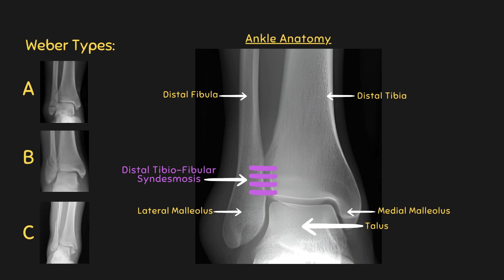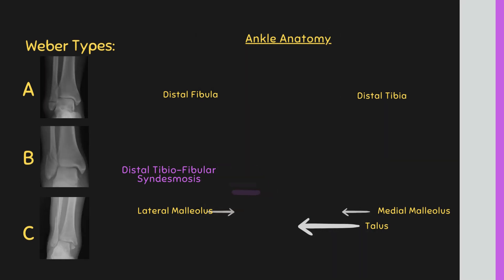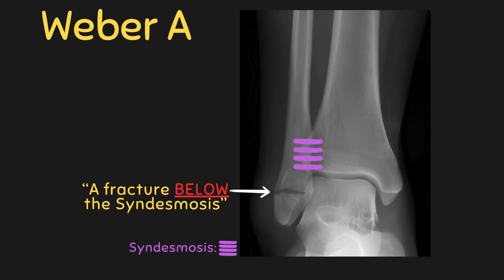Let's now take a look at a breakdown of Weber A, Weber B, and Weber C fractures. Weber A fractures occur at the most distal part of the fibula and therefore occur below the ankle syndesmosis. These fractures are usually transverse, as shown in the example on screen. As they are below the syndesmosis, they do not interfere with the key ligaments keeping the ankle joint intact. As a result, these fractures are usually always stable because the supporting ligaments are unaffected.